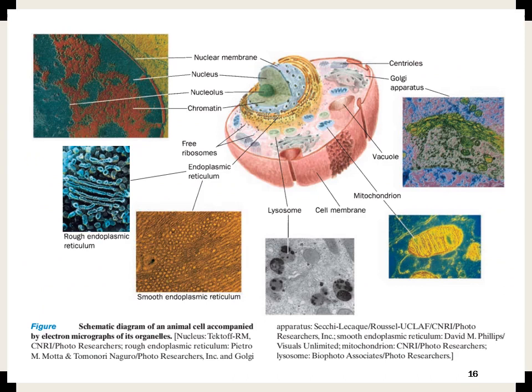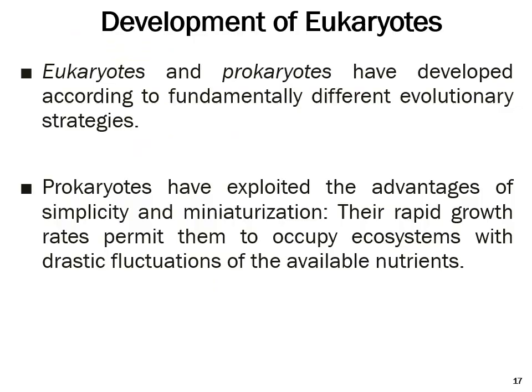This is an animal cell shown as an electron microscopic diagram. You can see different organelles: the cell membrane, the nucleus at the center surrounded by nuclear membrane, a small body called the nucleolus, and chromatin material which is the genetic material. There are also ribosomes, endoplasmic reticulum (smooth and rough), lysosomes, mitochondria, Golgi bodies, centrioles, and vacuoles, which we will study in detail in the next slides.